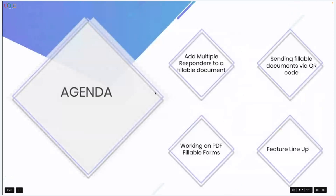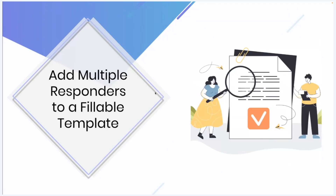The agenda for today: first, we are going to check how to add multiple responders to a fillable document. Then we are going to check how to send out fillable documents via QR code. And we can check about how to work on PDF fillable forms. We also have a feature lineup that's going to be pretty exciting. The first feature will allow you to add multiple responders to a form so that they will be able to add additional information in the document, and this can also be used for getting approvals or making corrections in a filled form.